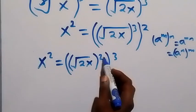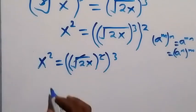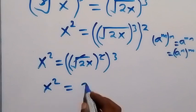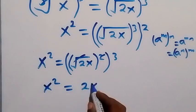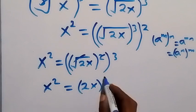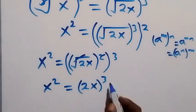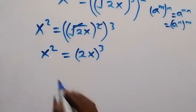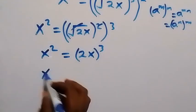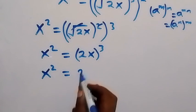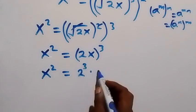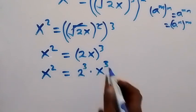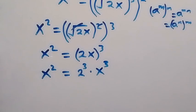Now the squaring cancels the square root, leaving x squared equals 2x to the power of 3. The power of 3 affects both 2 and x from the law of indices, meaning x squared equals 2 raised to power 3 times x raised to power 3. And 2 raised to power 3 is 2 times 2 times 2, which is 8.